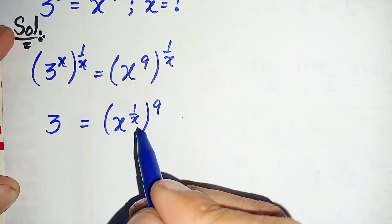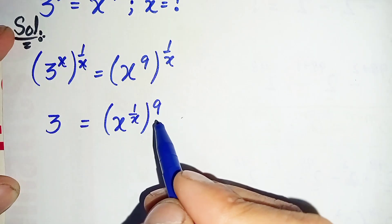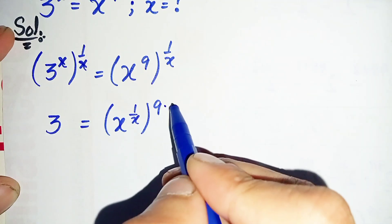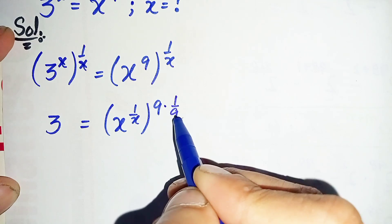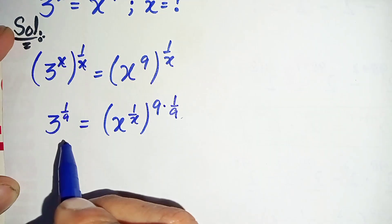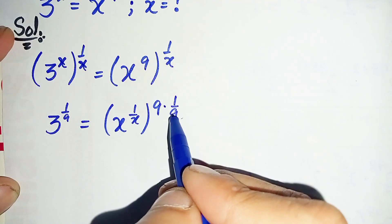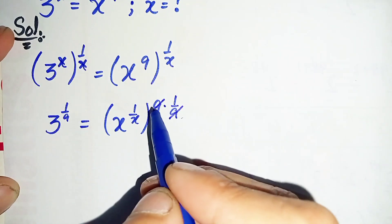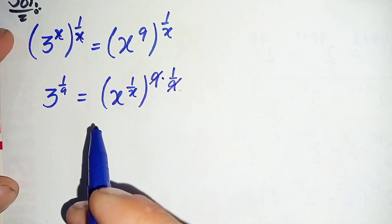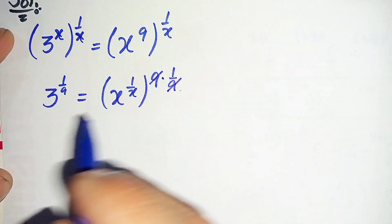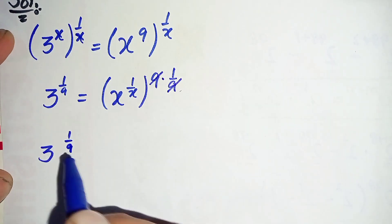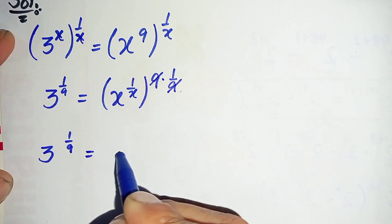Next I will try to eliminate this 9 from the power on the right hand side. To eliminate this 9, we will take 1 over 9 in the power on both sides. On the right hand side this power and this power will be cancelled, so only x raised to power 1 over x will be left. This equation will become 3 raised to power 1 over 9 is equal to x raised to power 1 over x.